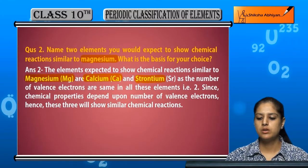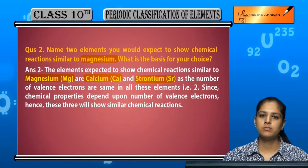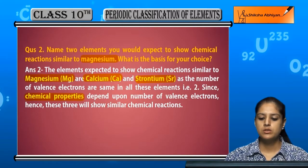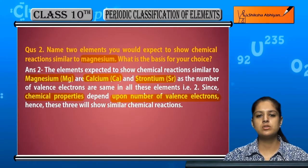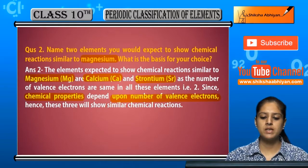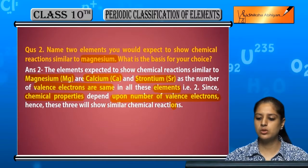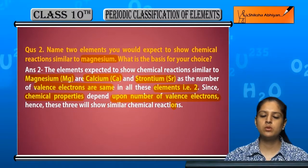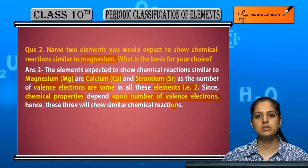The answer is calcium and strontium. Why are calcium and strontium like magnesium when it comes to chemical reactions? Chemical reactions and chemical properties are dependent on the valence electrons. Magnesium, calcium, and strontium all have the same number of valence electrons, which is two. Because they share the same valence electrons, they show the same chemical properties and the same chemical reactions.